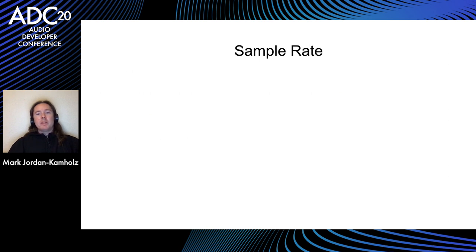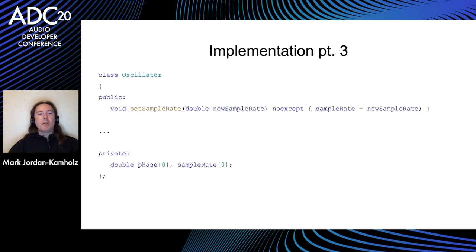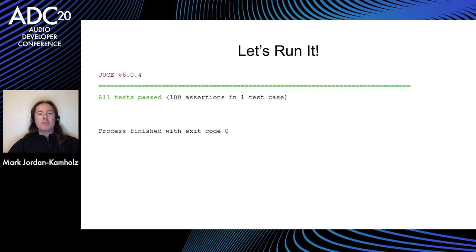Let's next implement some sample rate stuff. We'll have a variable called sample_rate and an oscillator, and we'll set the sample rate to the sample rate variable. We add a setter function and a sample_rate variable to our oscillator class — pretty standard stuff. And if we run this, we see that it passes. But of course, we want to be able to set the sample rate more than once and change it at any time. Even though we've set the sample rate once, we haven't necessarily checked that it works correctly over time.